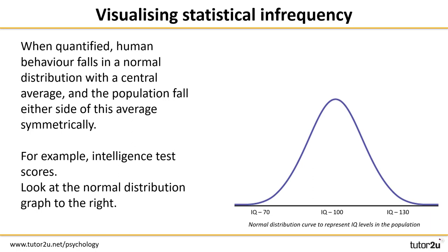Let's have a look at how the statistical infrequency definition of abnormality can be visualized. You may recognize this type of graph as a normal distribution graph. You can see there is a bell-shaped curve with a peak in the middle and both sides are symmetrical. This is because when we do any type of test that quantifies human behaviour, for example intelligence scores, they may fall in a normal distribution with a clear central average.